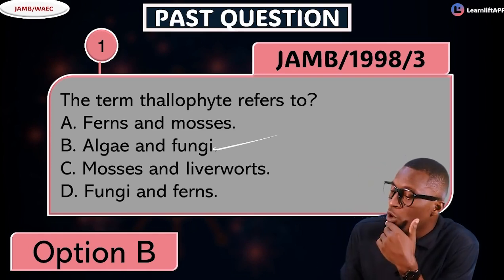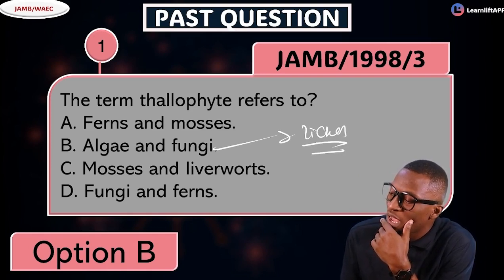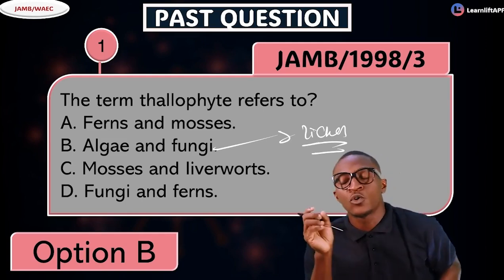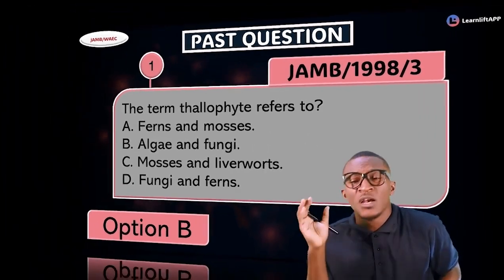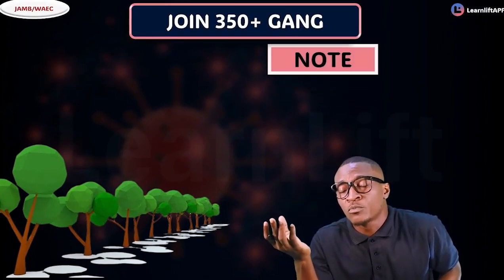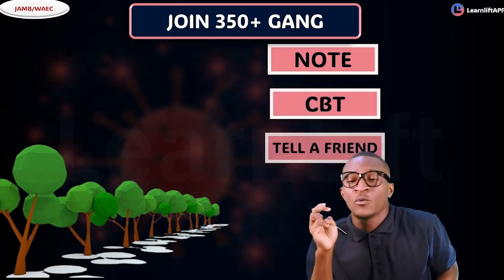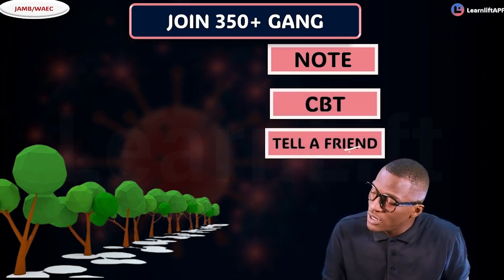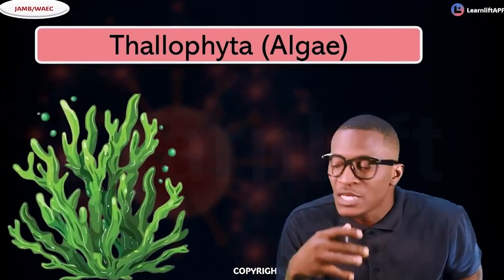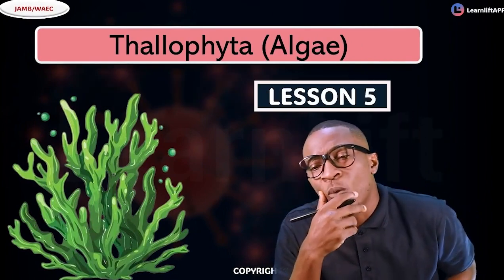Note that algae and fungi are collectively called lichens. Algae and fungi are collectively called lichens — take note of that. There are a lot of past questions in the notes, but in this class we are just classifying what thallophytes are. We will talk more in the next class, so go through the notes and practice.